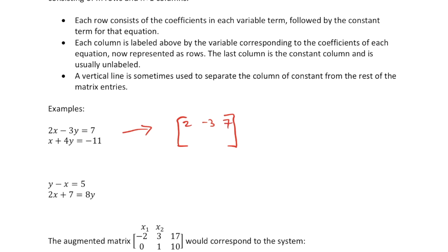The coefficient on x is actually 1 there, it's implicit, and then 4 is on y, and then negative 11 is the corresponding constant. Again, sometimes people will put a vertical line or a dashed vertical line separating that column of constants from the other constants being the coefficients.